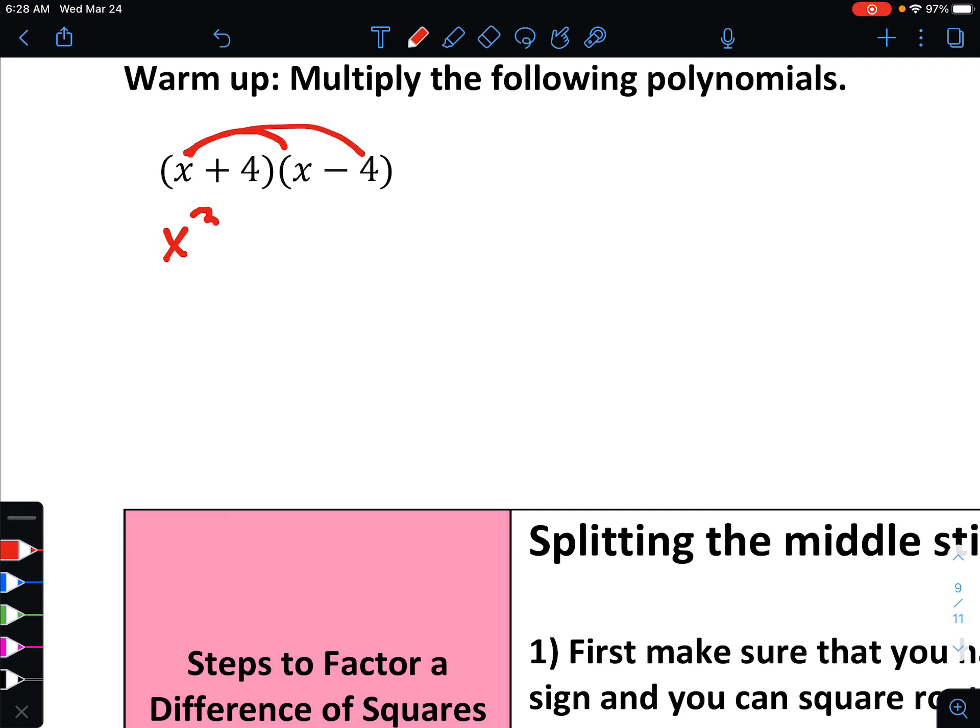So that would be taking x and multiplying with x, which is x squared. x multiplied with negative 4 is minus 4x. And then distribute your second term, so 4 multiplied with x is a positive 4x. 4 multiplied with negative 4 is a negative 16.